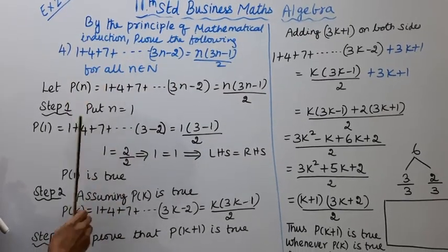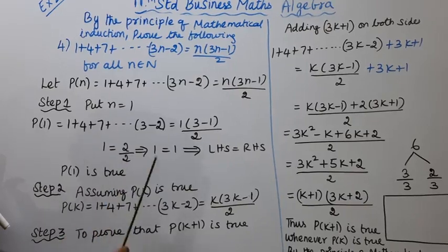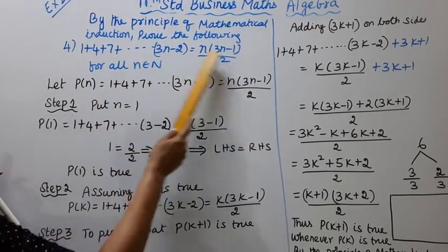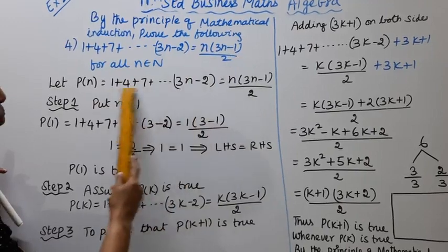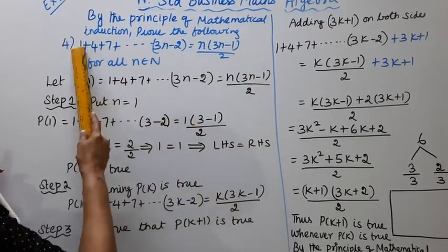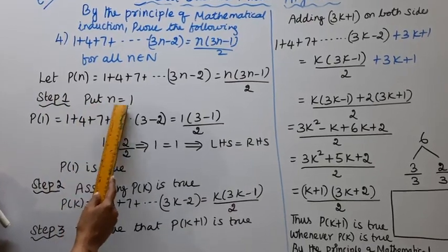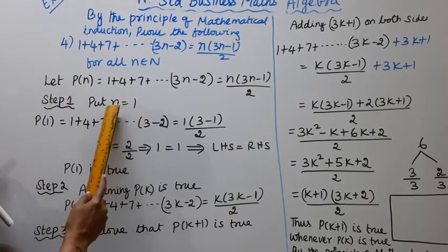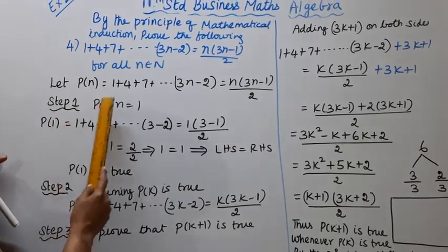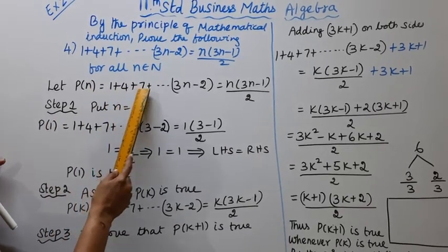Let P of n be the given statement. Step 1, put n equal to 1. When n equals 1, P of 1 equal to 1 plus 4 plus 7 etc. 3 into 1 minus 2 equals 1. 1 into 3 minus 1 by 2 equals 1. 1 equals 1, so LHS equals RHS. P of 1 is true.